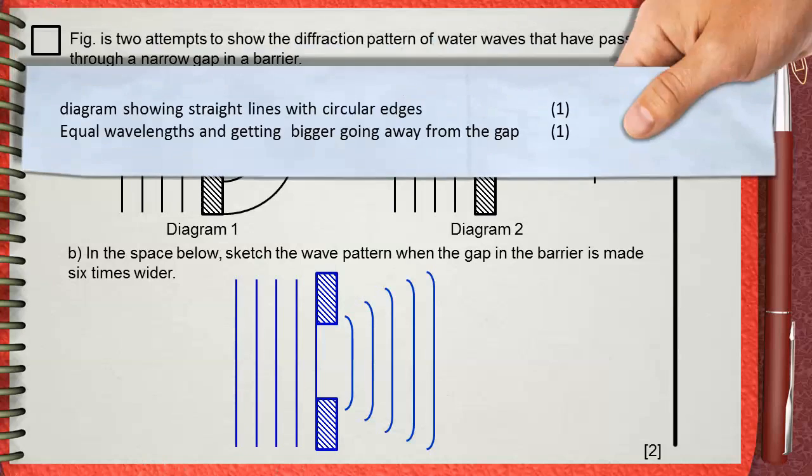The first mark is for diagram showing straight lines with circular edges. The second mark is for equal wavelengths and getting bigger going away from the gap.